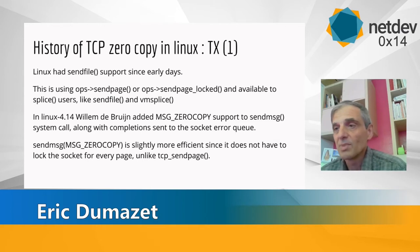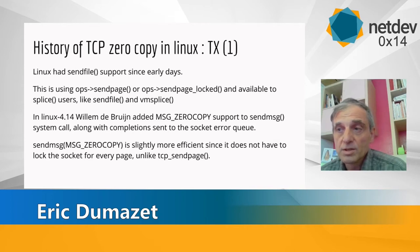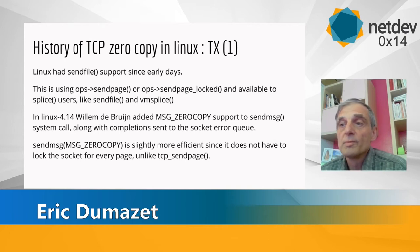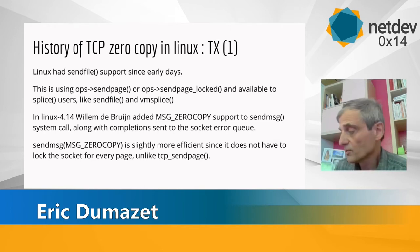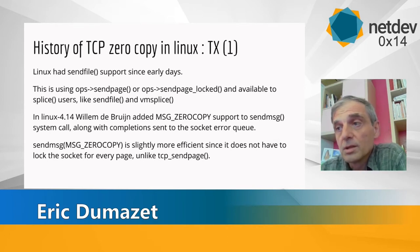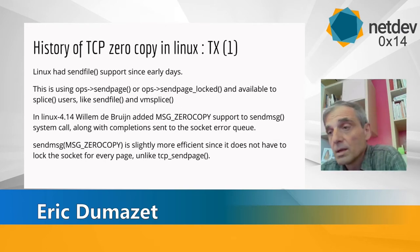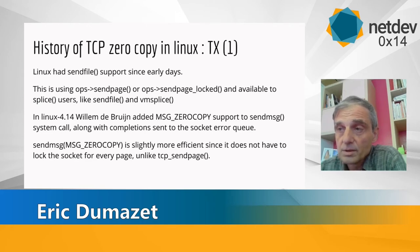So instead of using splice, which might be a bit complex, the application can just use sendmsg. One of the problems of sendmsg on the transmit side is a way for the application to know when a particular piece of memory can be reused — like freed or recycled. William added completion notification on the socket error queue so that an application could use sendmsg and then later use recvmsg to read the error queue to get the completion notification.